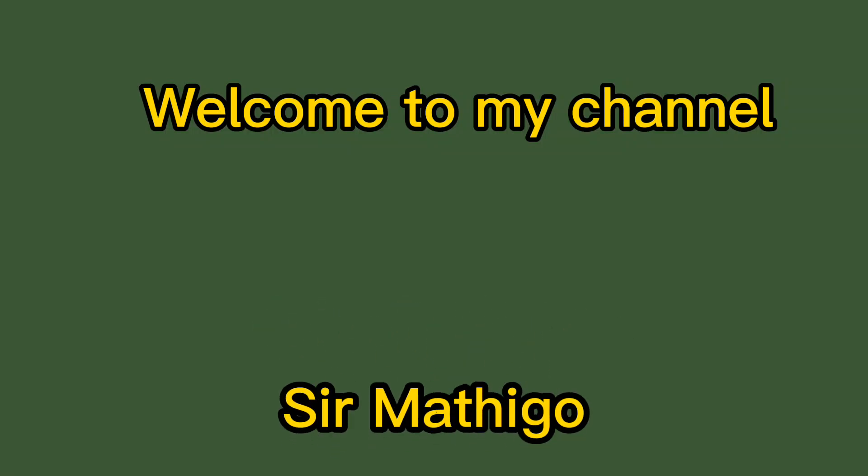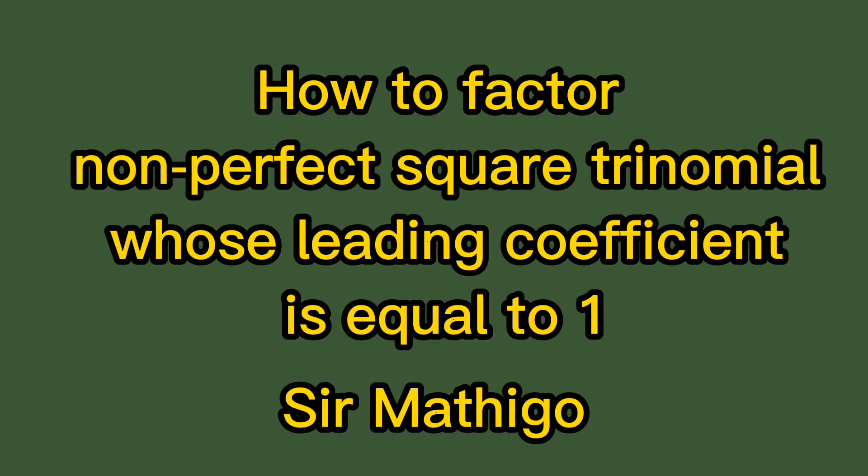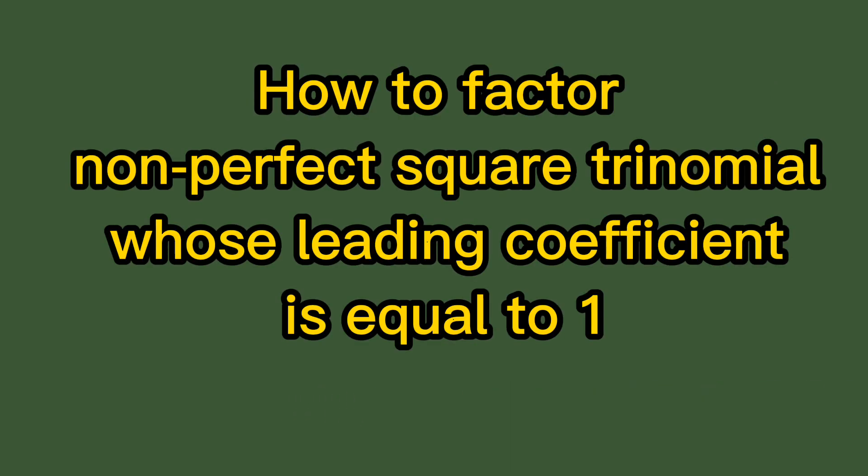Hi there, this is Sir Mathigo and welcome to my channel. Today I'm going to show you the second part of factoring non-perfect square trinomials whose leading coefficient is equal to 1. This time we will be dealing with negative numbers. For example, factor v squared minus 3v minus 10.